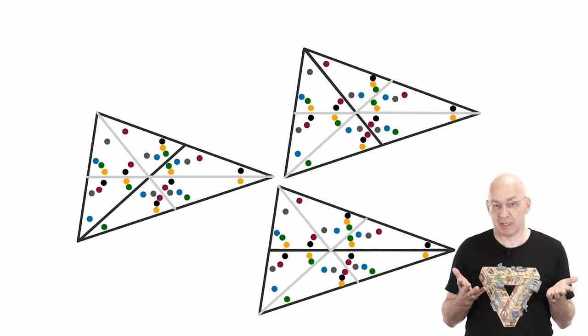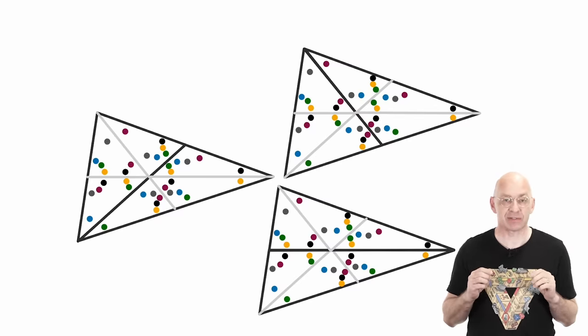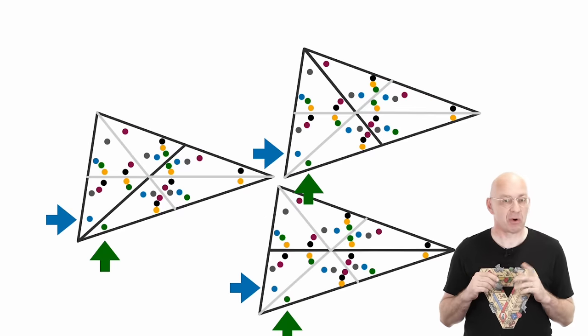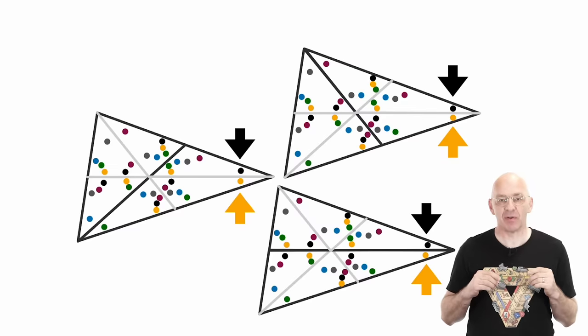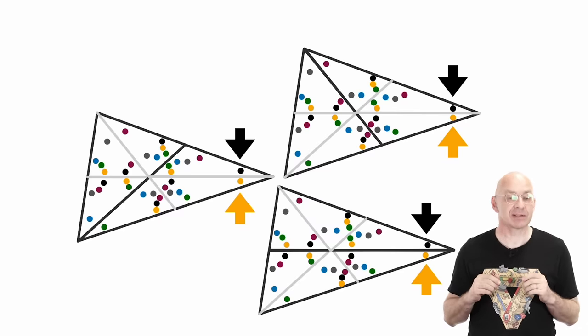They all look the same but to be sure that they really are, let's check the angles at the vertices. There. All the same and all the same and the same. And since we already checked that all three triangles also have the same area, we can be sure that all three triangles are congruent, that all three triangles are the same. Okay,